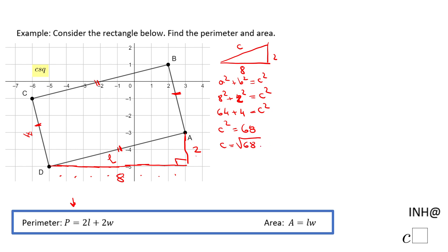To find c, we take the square root of 68. This can be simplified: 68 is 4 times 17. Since 4 is a perfect square, √4 = 2, so we get 2√17 as the simplified form for c. And c in this case is the segment AD, which is the length of this rectangle.